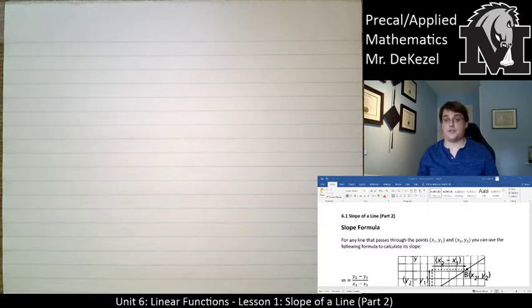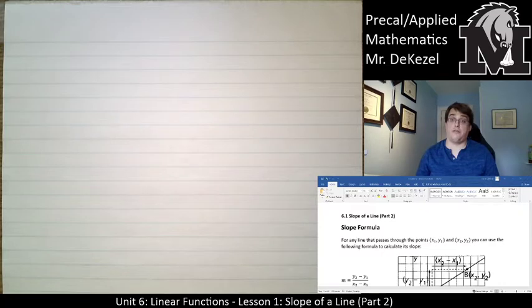What we're going to do today is talk about the formula that we can use to calculate the slope of the line if we're given two points. So the last problem in the last lecture, we were given two points and we had to take them, plot them on the graph, and then find out what the slope was by counting. What we're going to do here is show you a way that you can bypass that graphing step and just when given two points, find the slope using the formula.